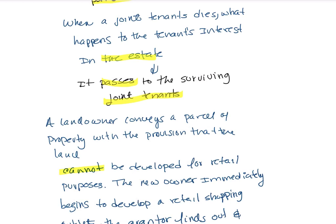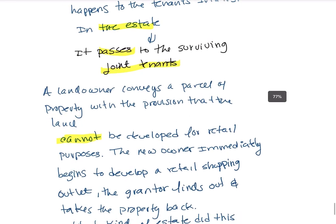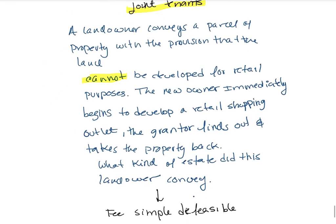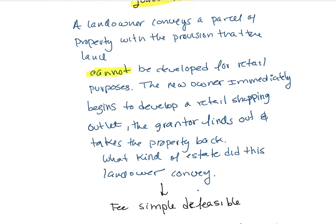A landlord conveys a property with a provision that the land cannot be developed for retail purposes. The new owner builds a retail shopping outlet, violating the condition. The grantor then takes the property back — this describes a fee simple defeasible estate.